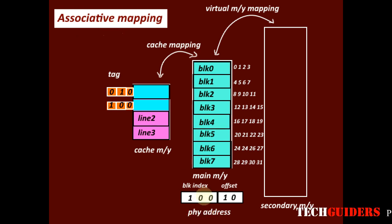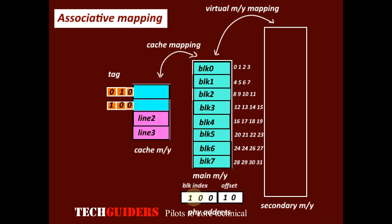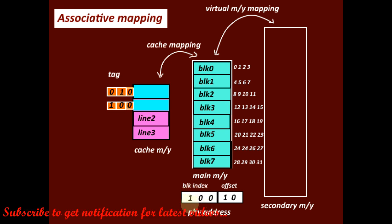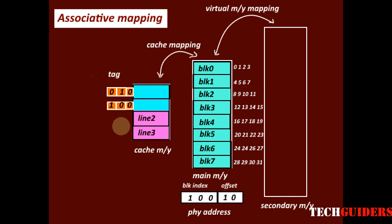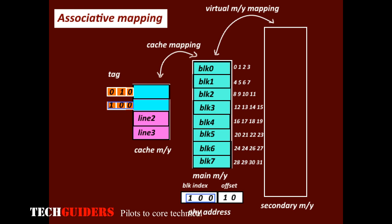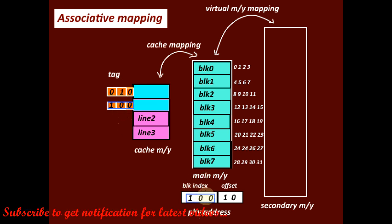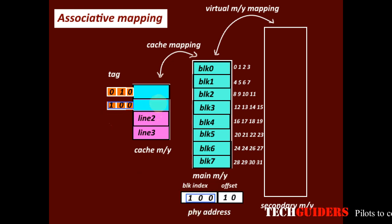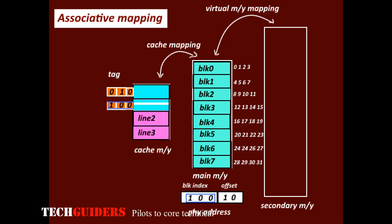In associative mapping, the entire block index acts as the tag. The block index is compared with each and every tag associated with the cache lines. If a match is found, it means the word addressed by this physical address is in the cache memory — this is a cache hit, and we can access the word from the cache itself.